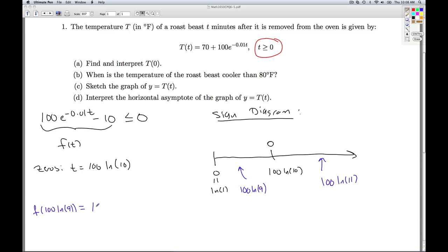Okay, so I plug that into my function. And I get 100 e to the negative 0.01 times 100 natural log of 9 minus 10. And let's see what I get. I multiply this through. And I get 100 e to the negative natural log of 9 minus 10.